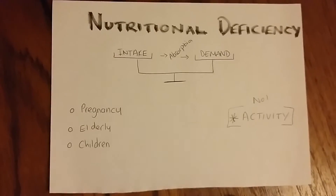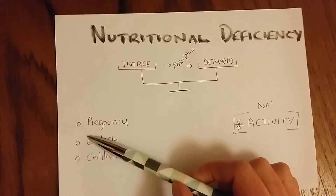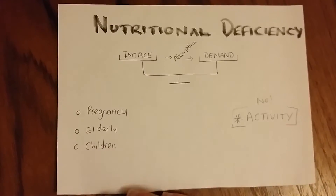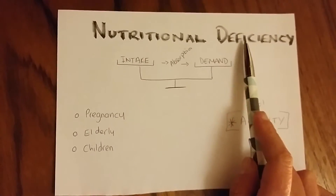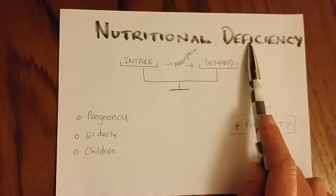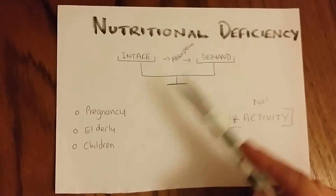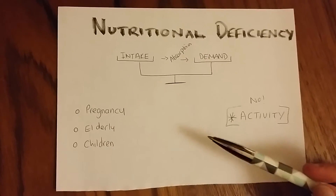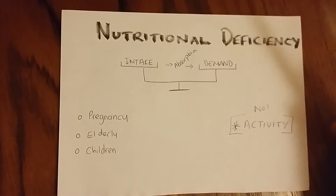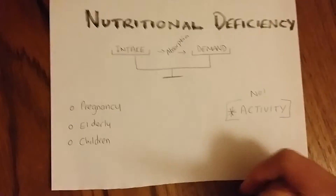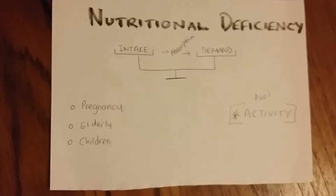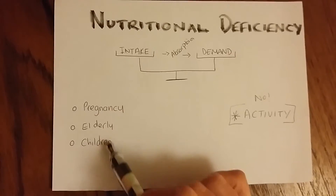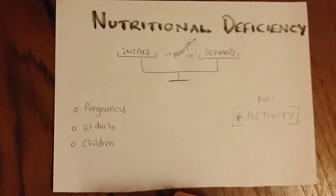A previous learner actually used the acronym PEC to remember those. But the way I like to remember it is: nutritional deficiency is talking about a specific condition or a specific special population — they have a specific need above and beyond a normal client. So when you think of deficiency, think outside of the normal average client and you'll be left with pregnancy, elderly, and children. And hopefully they'll appear in the answers.